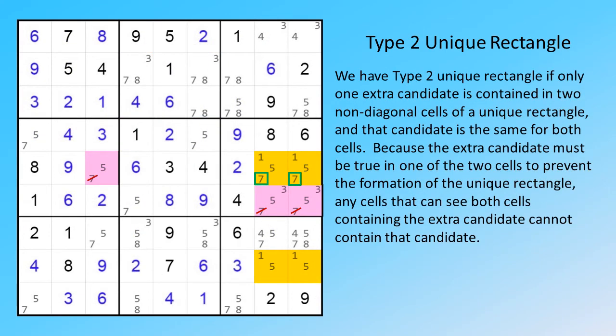We have type 2 unique rectangle if only one extra candidate is contained in two non-diagonal cells of a unique rectangle, and that candidate is the same for both cells.